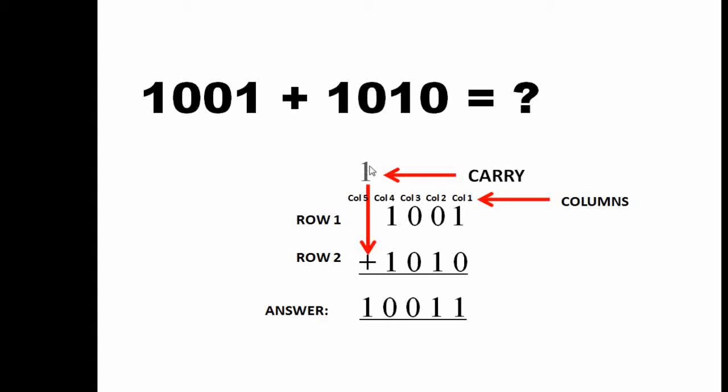That is in the fifth column you have a carry of 1. So 1 carry and in column 5 row 1 you have nothing. Column 5 row 2 also you have nothing. That means you only have carry of 1. That is 1 plus 0 plus 0 would be 1 itself.